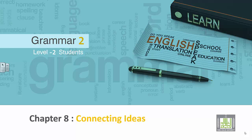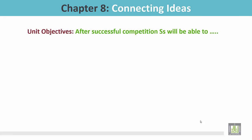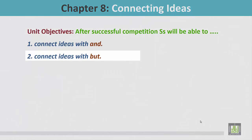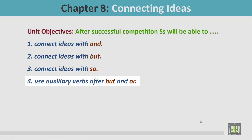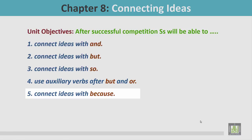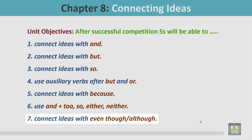Grammar 2 for level 2 students, Chapter 8: Connecting Ideas. Unit objectives — after successful completion, students will be able to connect ideas with 'and', 'but', 'so'; use auxiliary verbs after 'but' and 'or'; connect ideas with 'because', 'it was', and plus two, 'so', 'either', 'neither'; and connect ideas with 'even though' or 'although'.